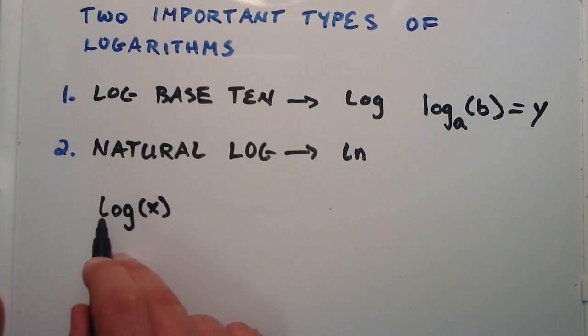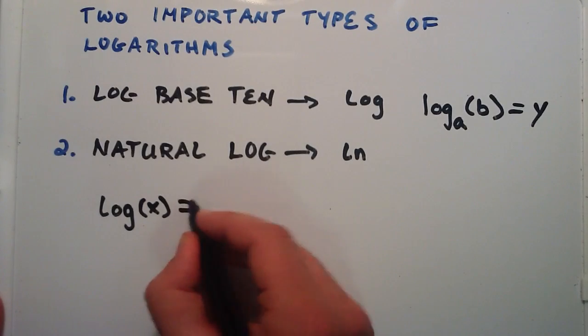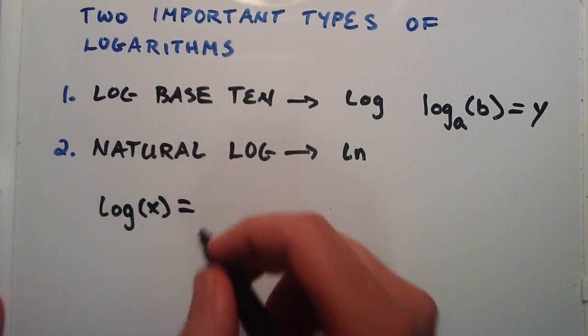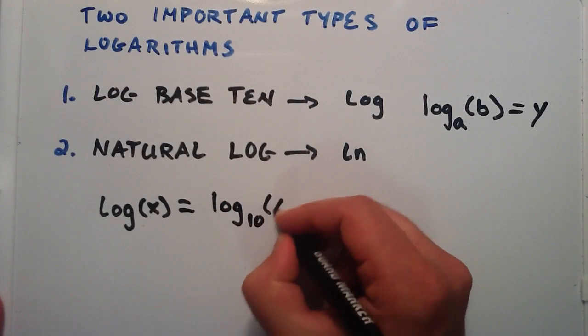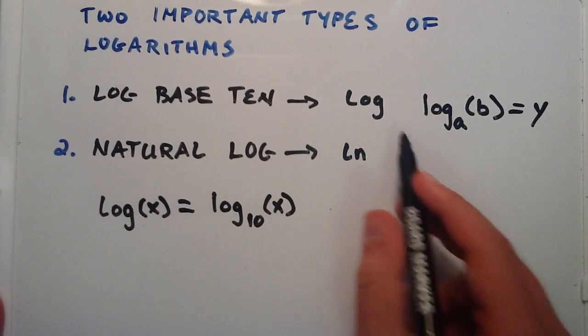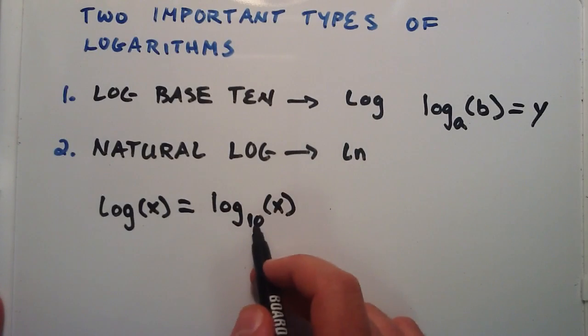So any time you see a log without a base specified, then you just have to assume that that is log base 10. So this button on your calculator is simply talking about log base 10.